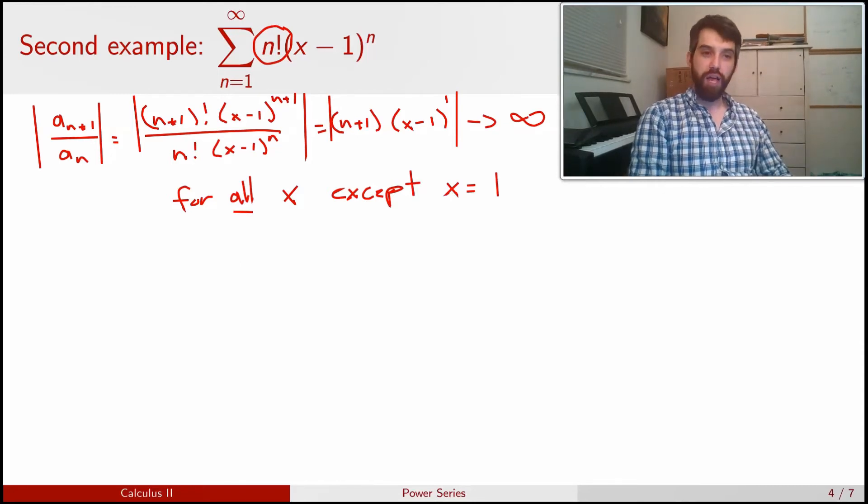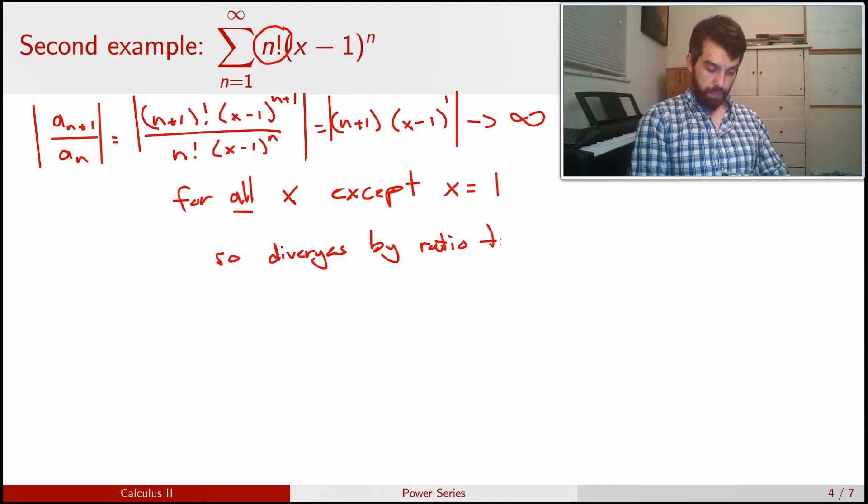But in all other cases, we get it diverging by the ratio test, because it does not converge to a value less than 1. So, diverges by the ratio test. And in that specific case where the x is equal to 1, what I get is just a sum of 0's. That goes to 0, and so it does indeed converge.